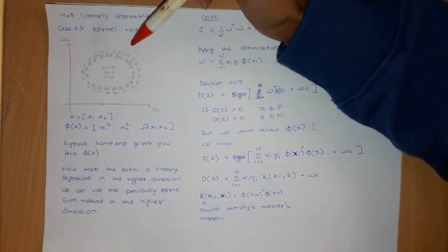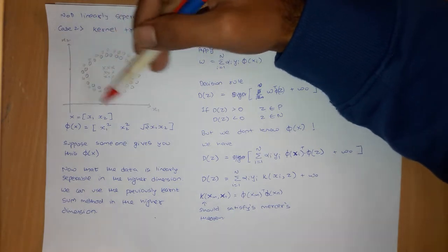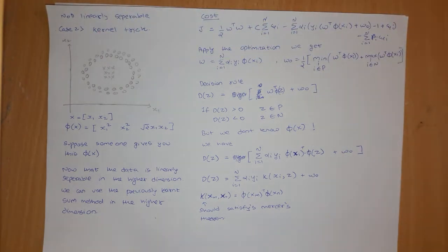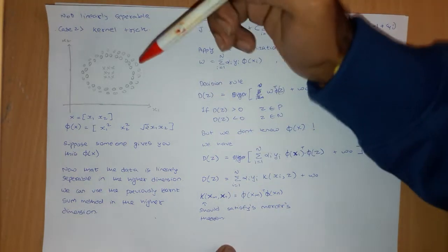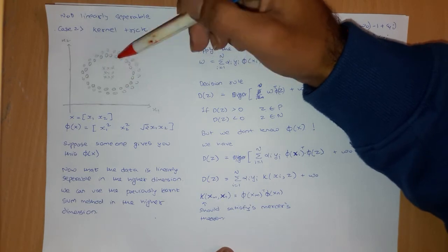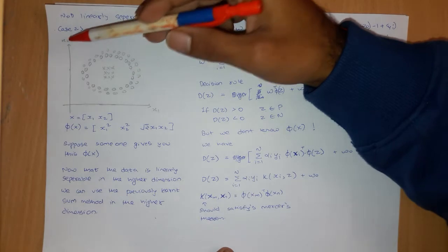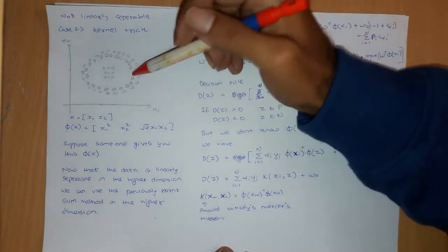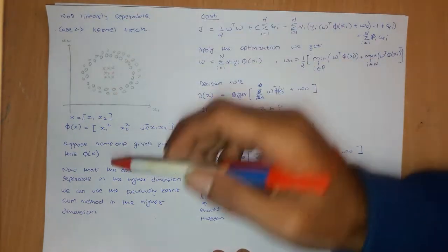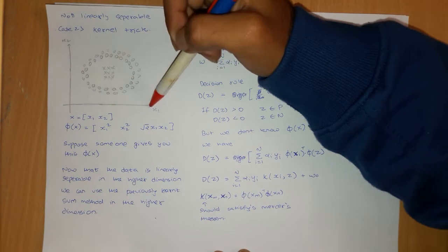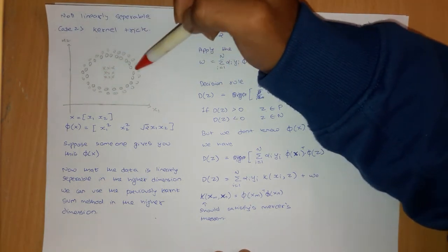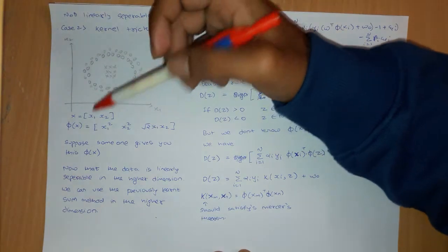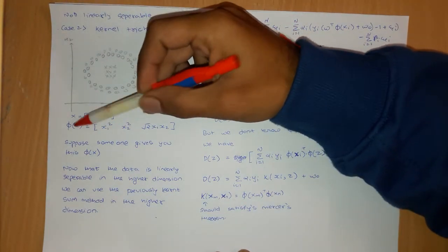To deal with such problems we have something known as the kernel trick. The intuition behind the kernel trick is: instead of separating these classes in this particular feature space, what we can do is transform this feature space into some higher dimensional feature space. Every x here has two features x1 and x2, and we can have some function phi of x.